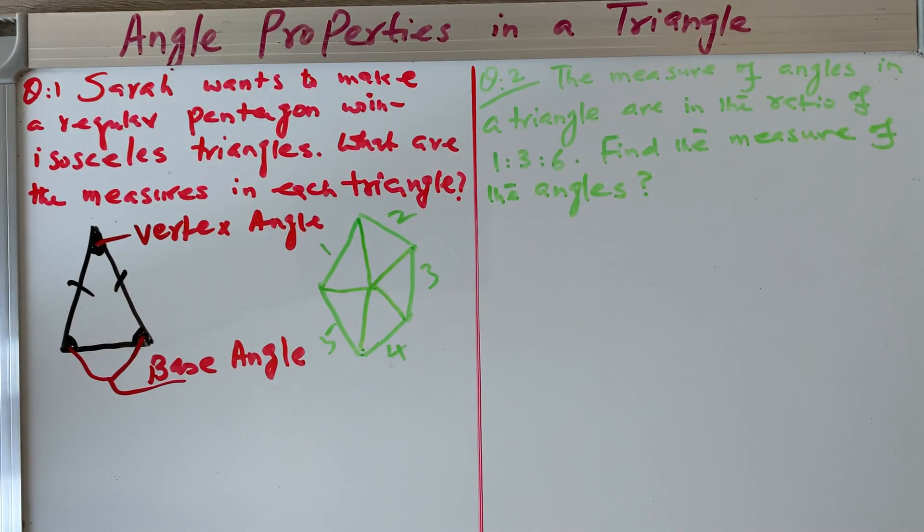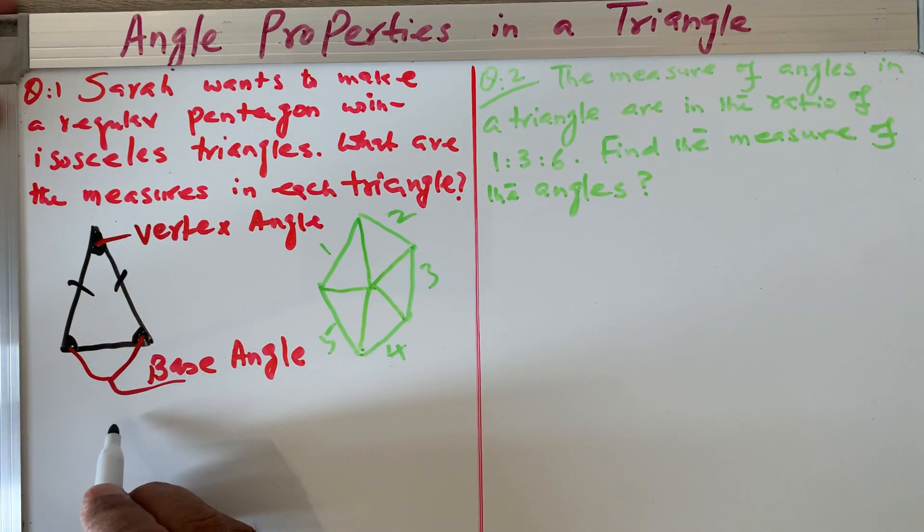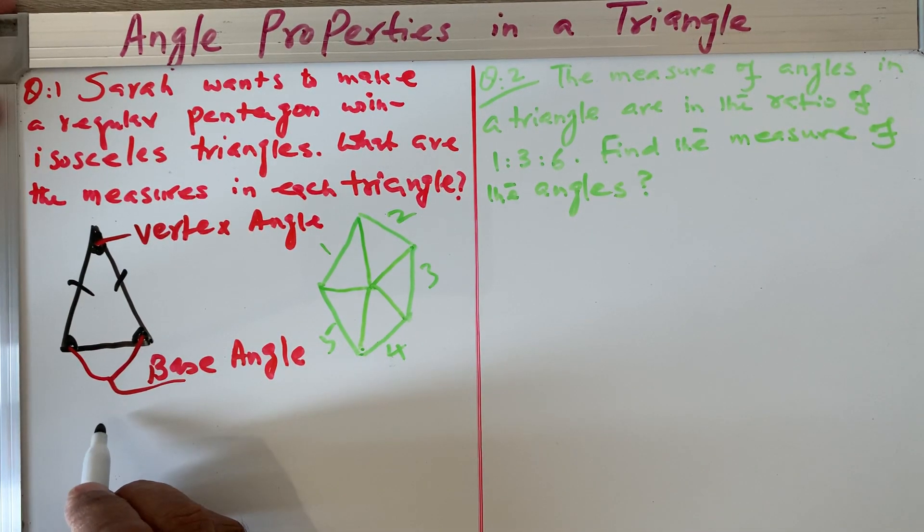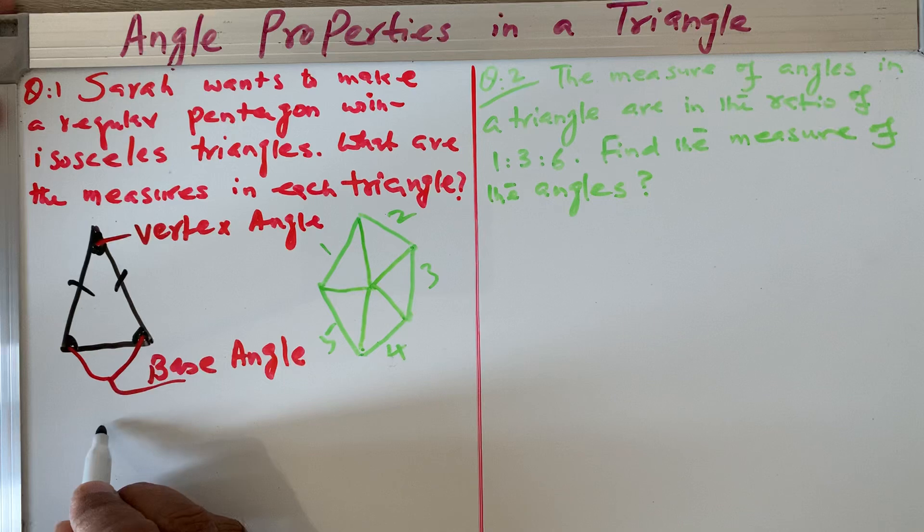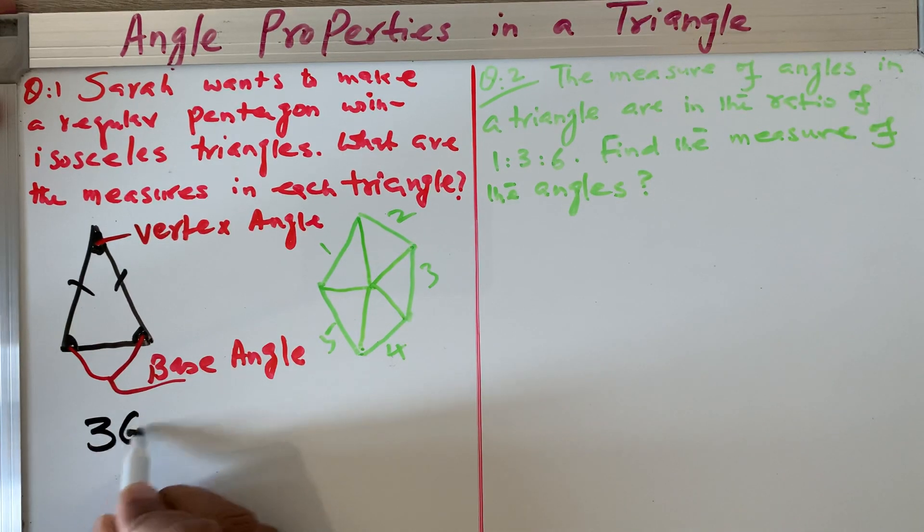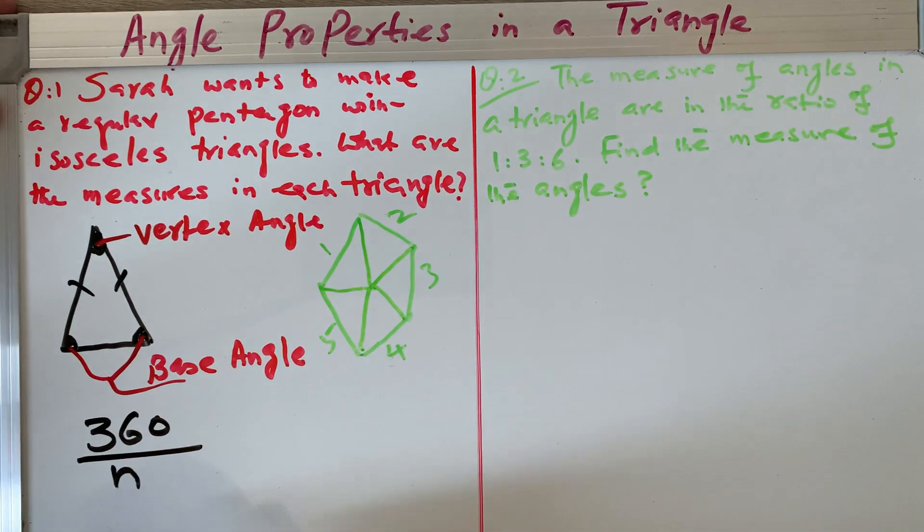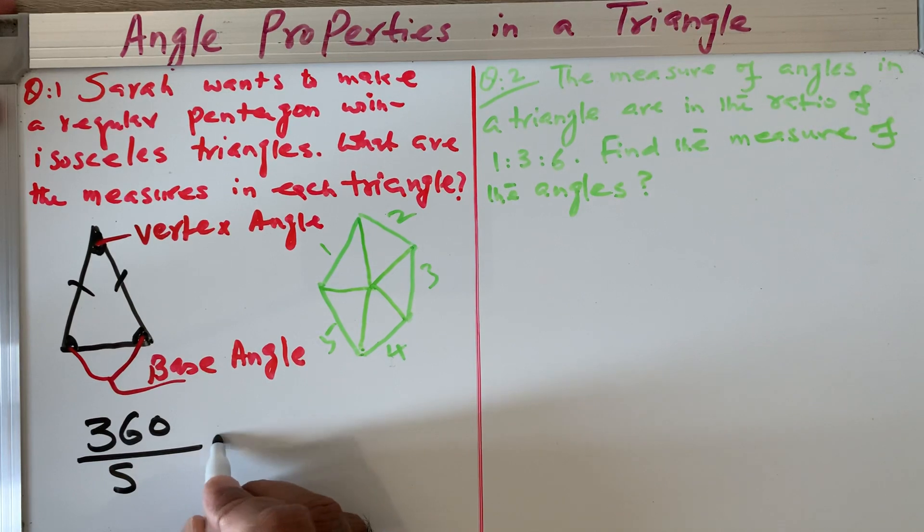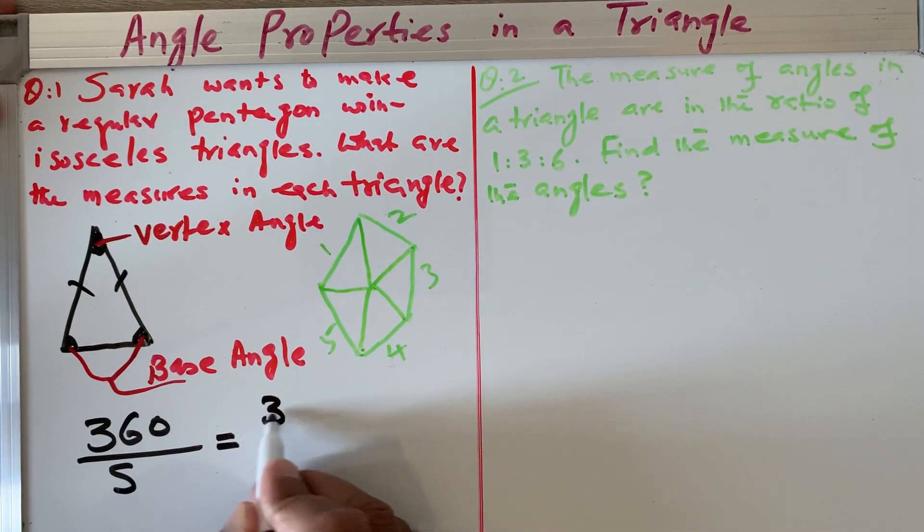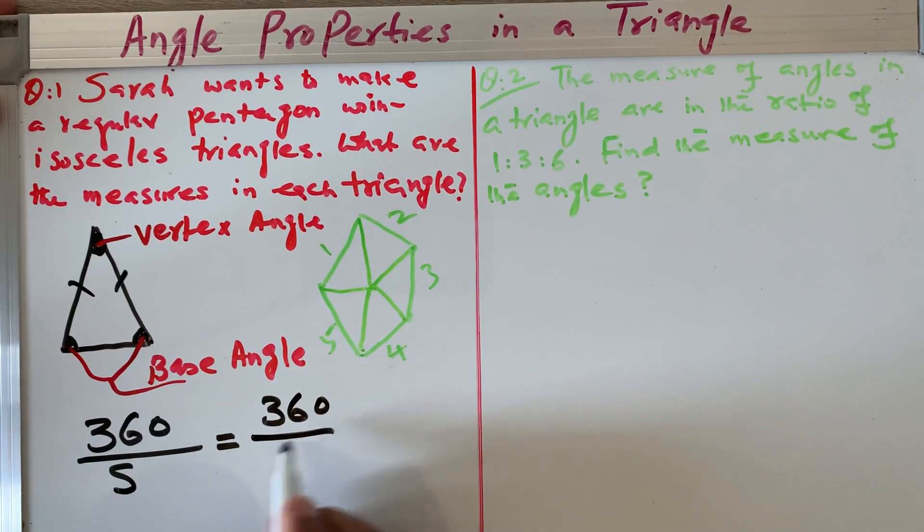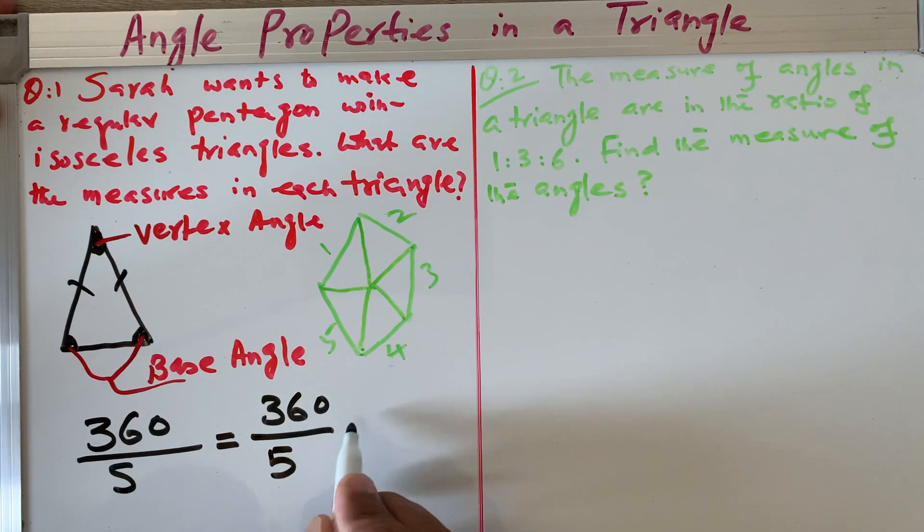We learned in the last video that in any polygon, you can find out the interior angle. The formula was 360 divided by the number of sides in the polygon. We put S for the number of sides. Sometimes textbooks show S or N. You need to understand the concept.